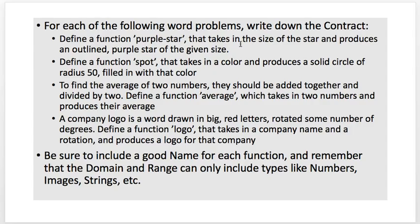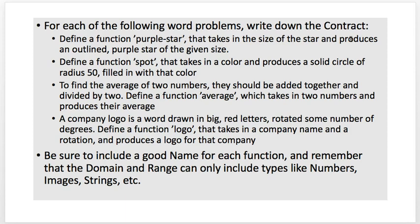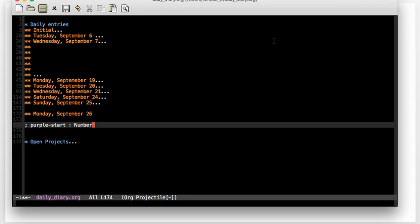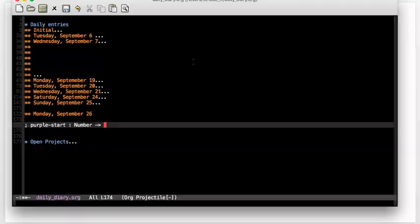Define a function purple-star that takes in the size of the star and produces an outlined purple star of the given size. So the parts of the contract are the name — it looks like the name should be purple-star. So I'm going to start with a semicolon and type in purple-star, colon. It takes in the size of the star, which is a number, and it produces an outlined purple star of the given size — a star is an image.